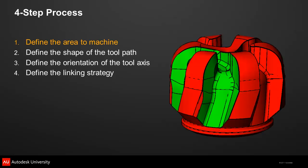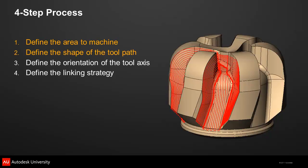The first step is to define the areas you will be machining and the areas you want to exclude. In this picture, the green area is selected for machining and all the faces in the red area will be avoided. The next step is to define the shape of the path the tool will follow — also called the machining pattern. The picture shows a pattern that follows the flow lines of the surfaces.